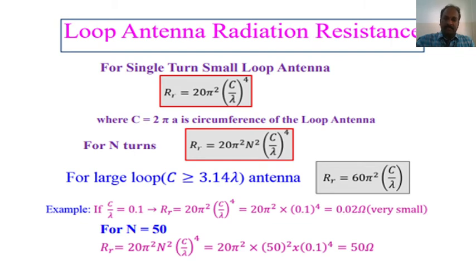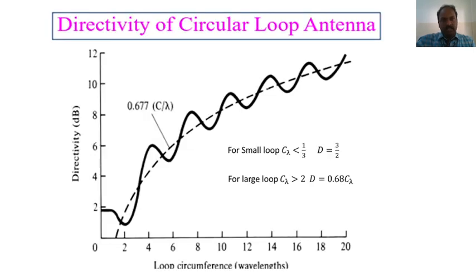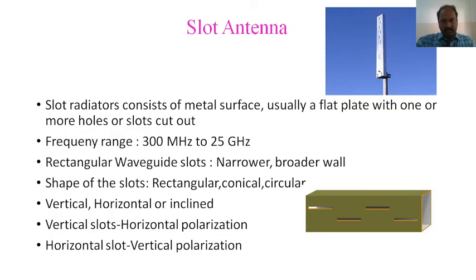Again, the same procedure we followed for the short dipole and the half-wave dipole is applied here — the same procedure is followed to find the radiation resistance from the field components of the loop antenna. Here, we see how the radiation resistance varies based on the loop circumference, and how the directivity versus loop circumference behaves. As the loop circumference goes on increasing, the directivity is also increasing.